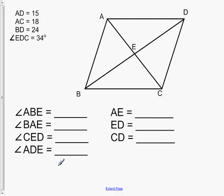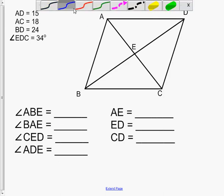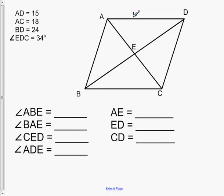So I'm going to label AD as 15, and I'll do the sides in blue. So AD is 15. AC is 18. And so what I'm going to do is, I know these are cut in half. So half of 18 is 9 and 9.